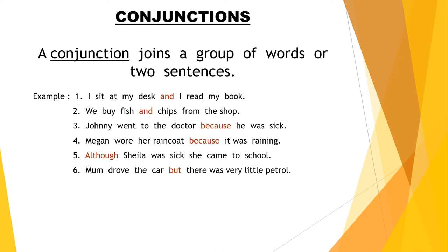Sentence 4: Megan wore her raincoat. It was raining. Joined: Megan wore her raincoat because it was raining. Sentence 5: Sheila was sick but she came to school. Sentence 6: Mum drove the car but there was very little petrol.